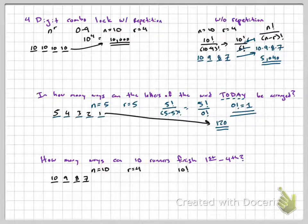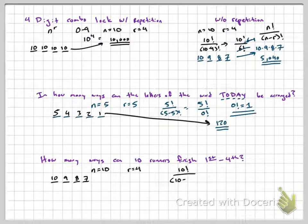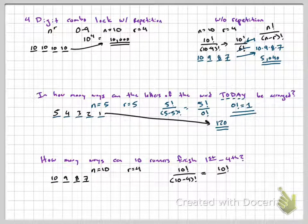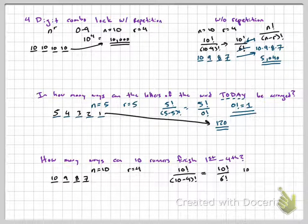But again, just to show you how the formula works. 10 factorial over 6 factorial. And once again, we're left with 10, 9, 8, 7.